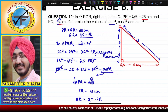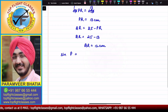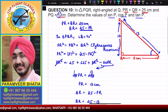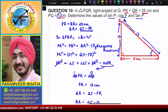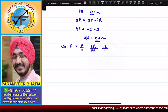Now we calculate sin P, cos P, and tan P. For angle P, sin P is perpendicular over hypotenuse — that is, the side opposite to angle P divided by the hypotenuse. The opposite side is QR and the hypotenuse is PR. So sin P equals QR over PR equals 12 over 13.